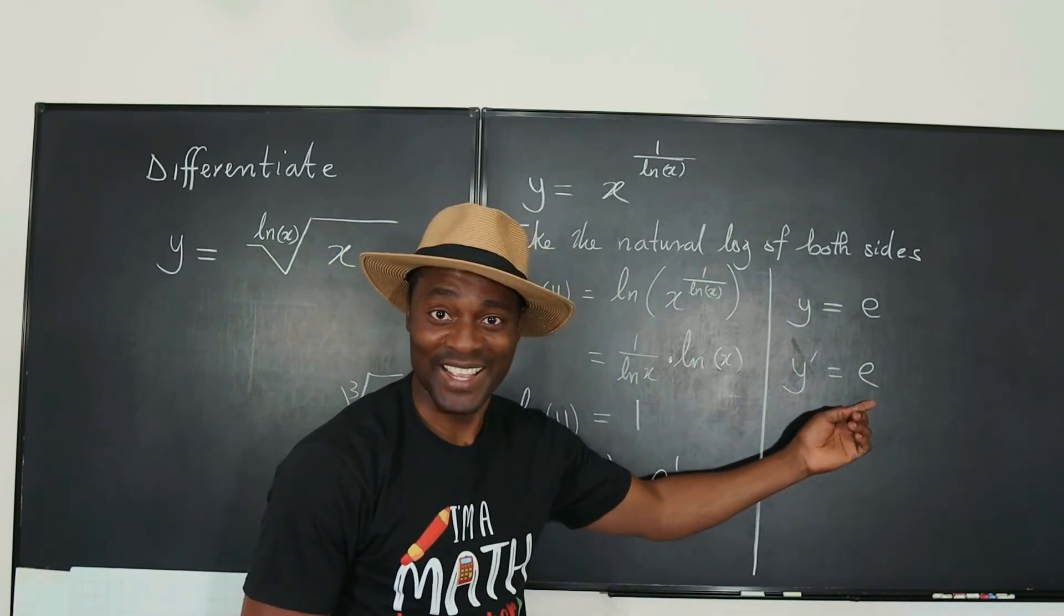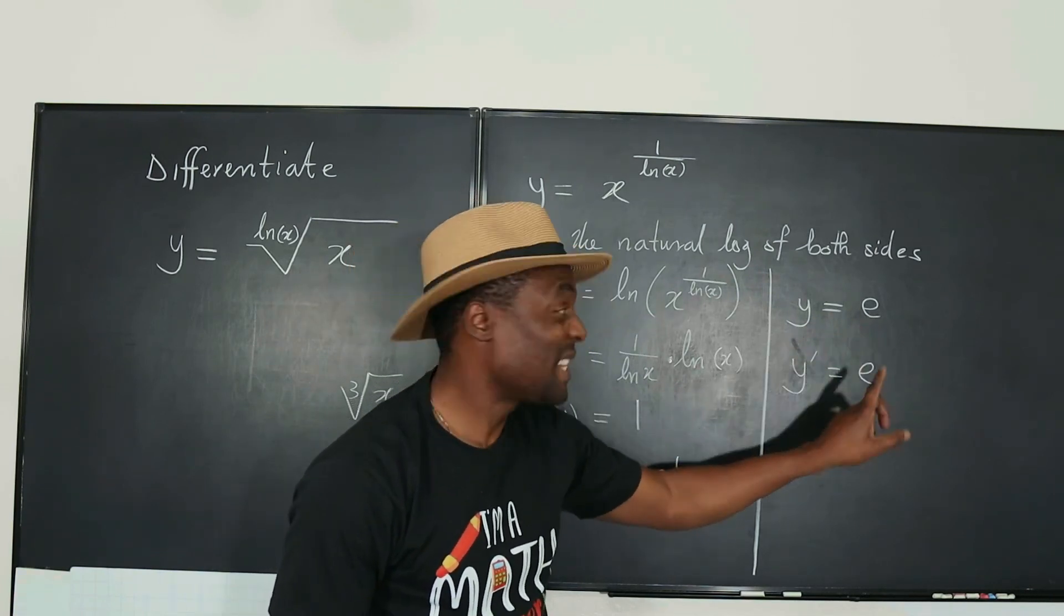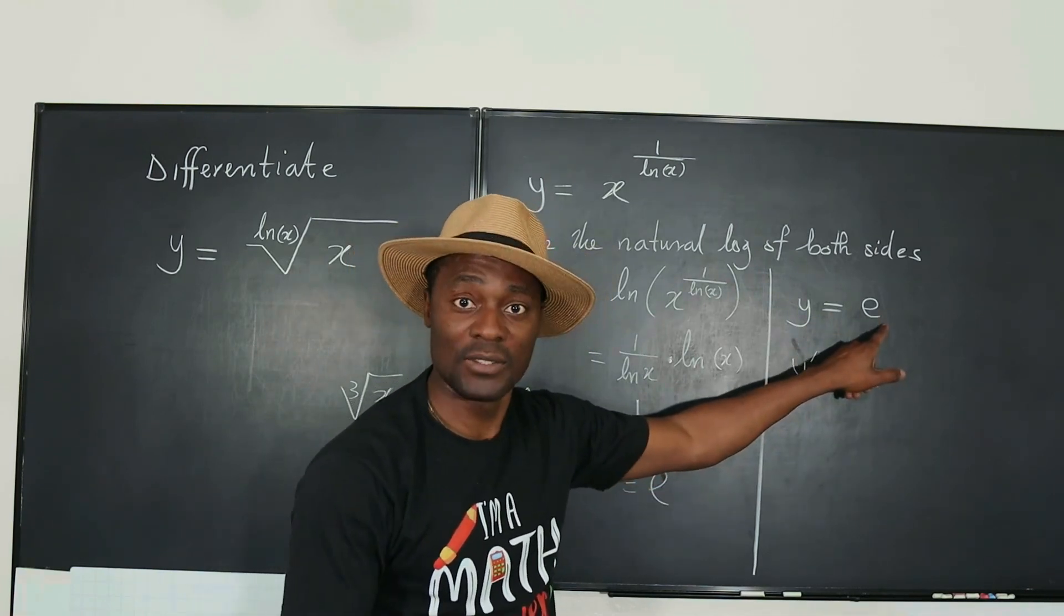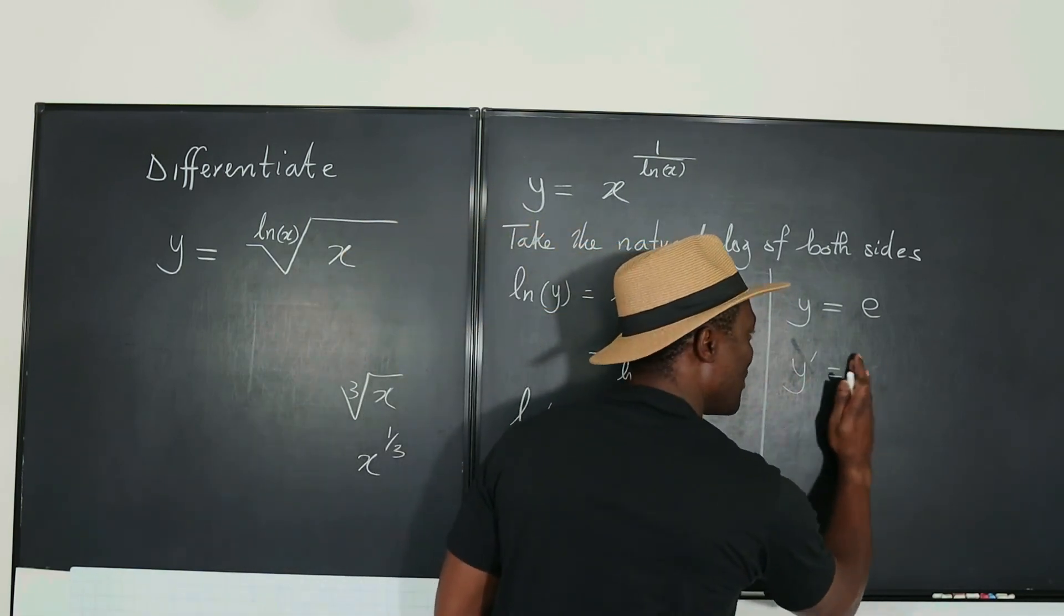Yeah, this is where some people get stuck. It is not e. The derivative of e is zero because e is a number, is a constant. So the derivative of a constant is zero. So we're going to change this to zero.